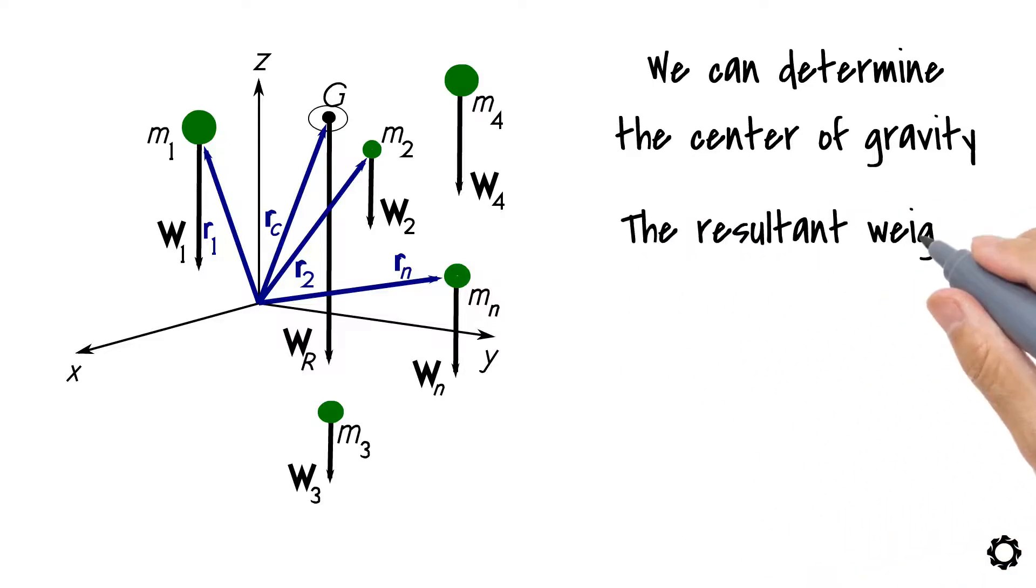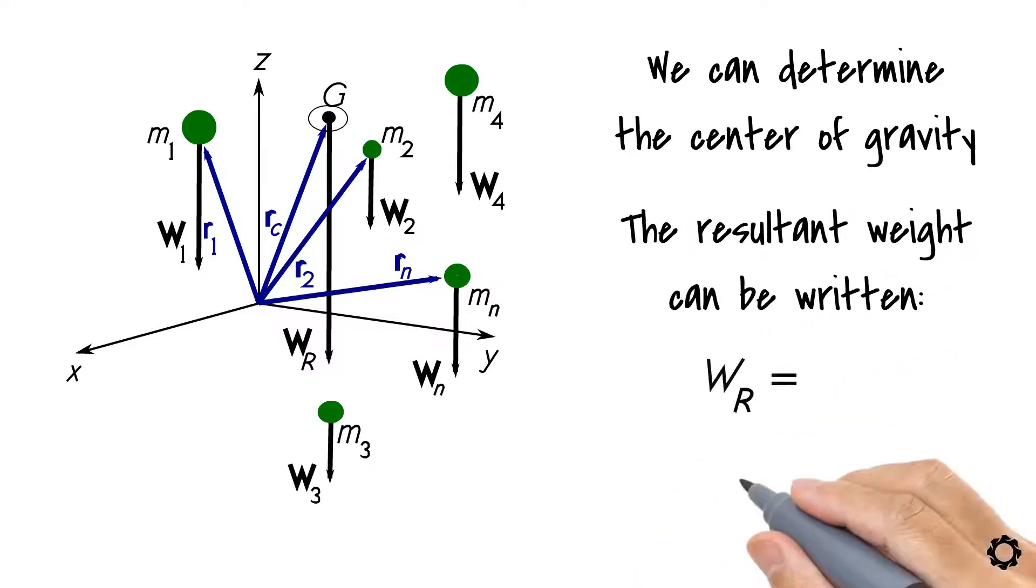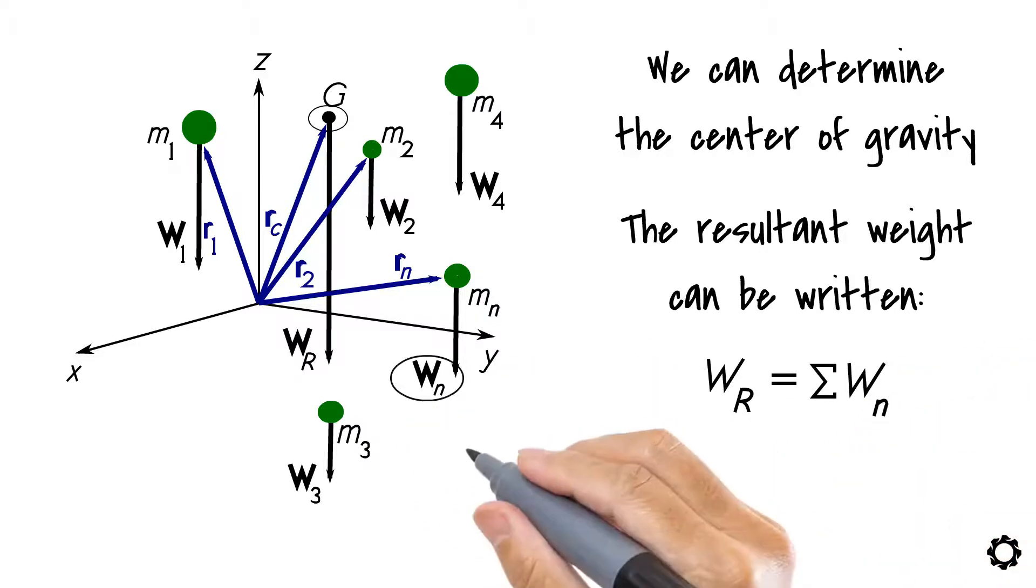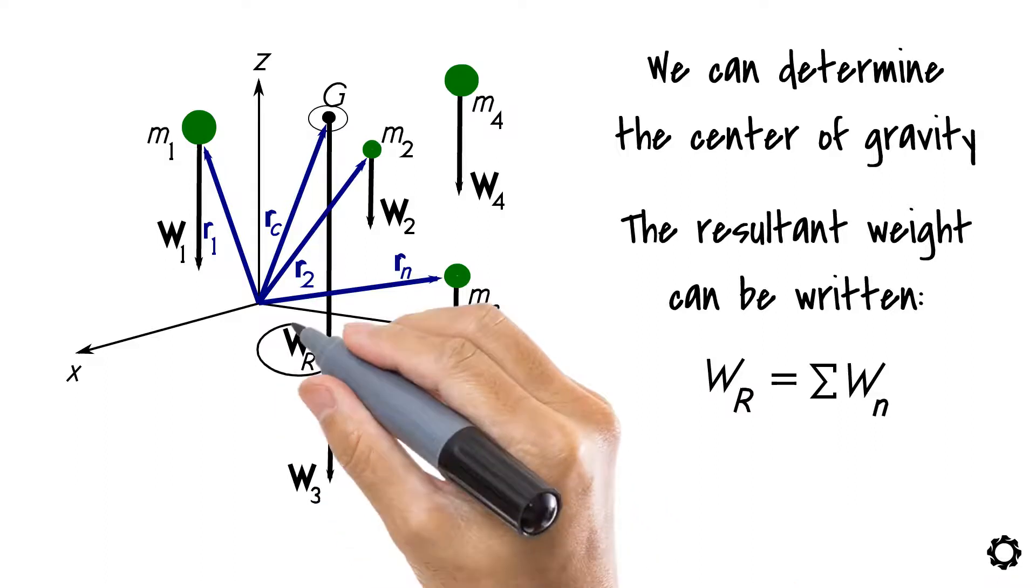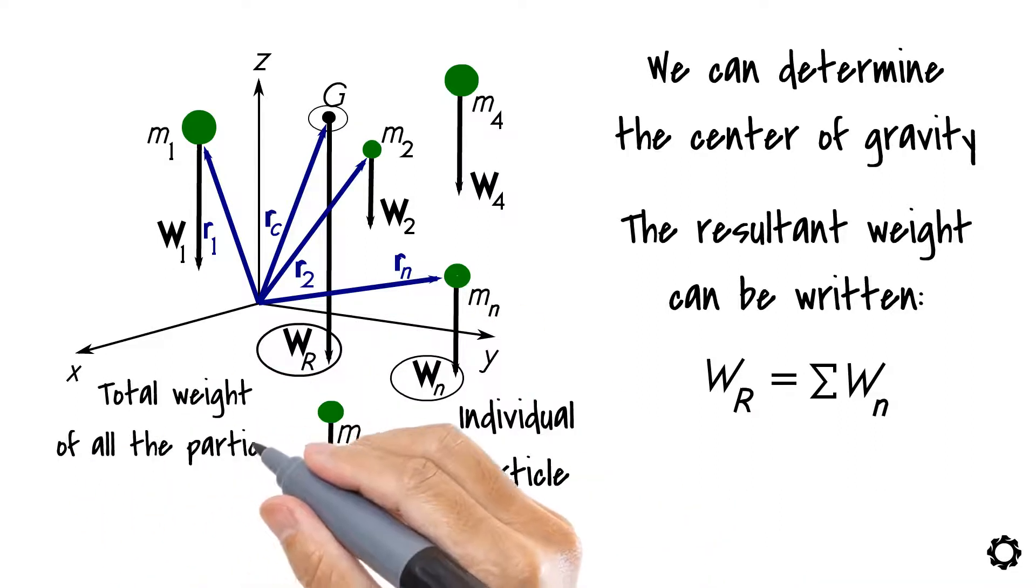Therefore, the resultant weight can be written as follows: WR equals summation of WN, where WN is the weight of an individual particle and WR is the total weight of all the particles in the system.